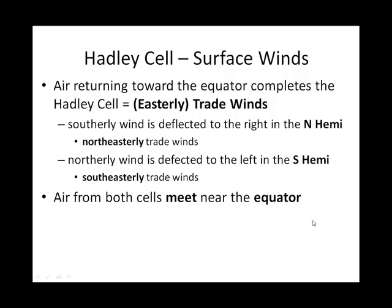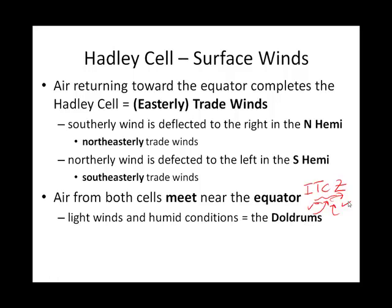Both the northeasterly and southeasterly trade winds converge or meet up where both Hadley cells began in the first place, around the equator. This meeting point is called the Intertropical Convergence Zone, or ITCZ. That's where both Hadley cells meet, with ascending air going up to the tropopause and moving in both directions. The air is light where those two easterly trades come together, and we call that region the doldrums.